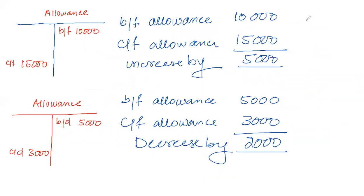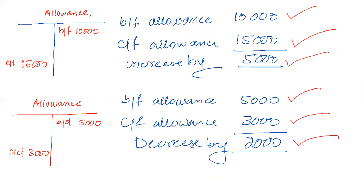The difference is that we compare opening balance to closing balance. For example: opening balance 10,000, closing balance 15,000 — increase by 5,000, which is an expense. If opening balance is 5,000 and closing balance is 3,000, then it decreases by 2,000, which is income. This can also be done through a ledger account: if the difference comes on the credit side, it is an increase in allowance; if the difference comes on the debit side, it is a decrease in allowance.